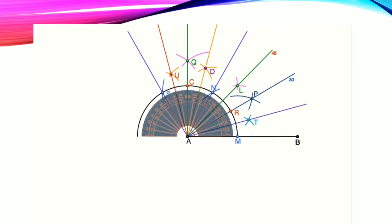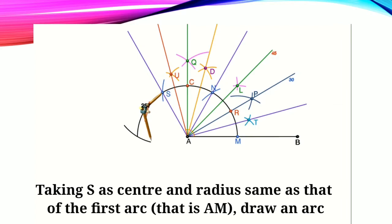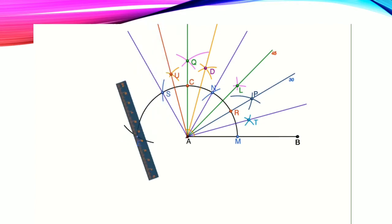Now let's check whether we have drawn it correctly. Yes, it is correct. Next, I want to draw an angle of 180 degrees, or a straight angle. For that, taking S as center and radius same as that of the first arc (that is AM), I have drawn an arc.